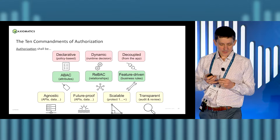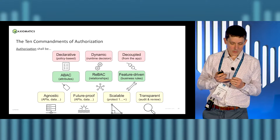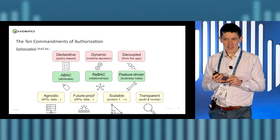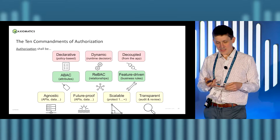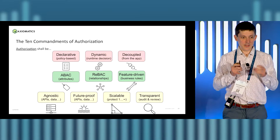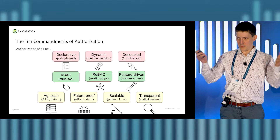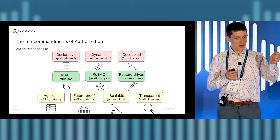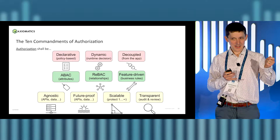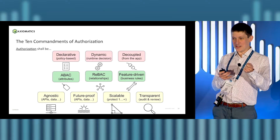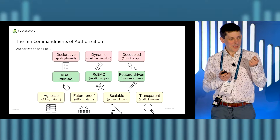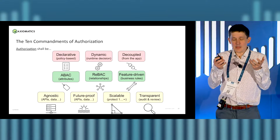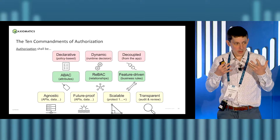I visited a large wealth management bank out of New York, and they were interested in doing externalized authorization. To prove compliance, they literally take a screenshot of their C code and share it with the compliance team. I asked: does the compliance team understand C? They said no. But that's how they prove compliance. Instead, what you need is a configuration or language, a policy that makes sense to everyone.